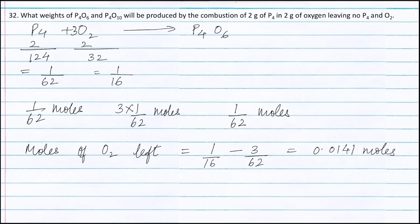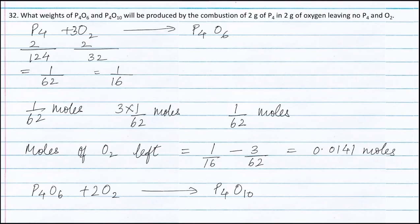The equation for the reaction of P4O6 with oxygen to form P4O10 is: P4O6 + O2 → P4O10. Balancing the reaction, we get 1 mole of P4O6 reacts with 2 moles of oxygen to form 1 mole of P4O10.